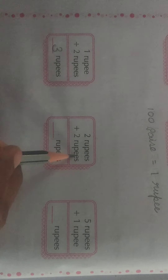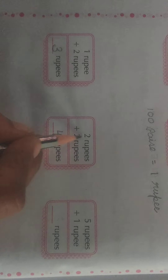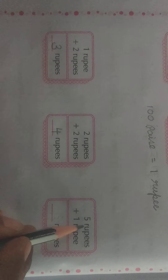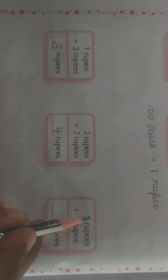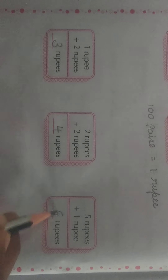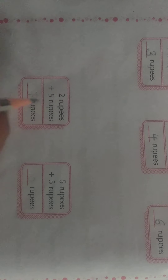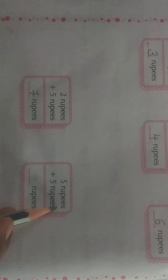Next: 2 rupees plus 2 rupees is equal to 4 — 2 plus 2 is equal to 4, right. And 5 rupees plus 1 rupee is equal to — after 5, 6 — 6 rupees. Next sum: 2 rupees plus 5 rupees is equal to how much? 2 plus 5 is equal to 7 — 7 rupees. And 5 rupees plus 5 rupees — 5 plus 5 is equal to 10 rupees. The answer is 10 rupees.